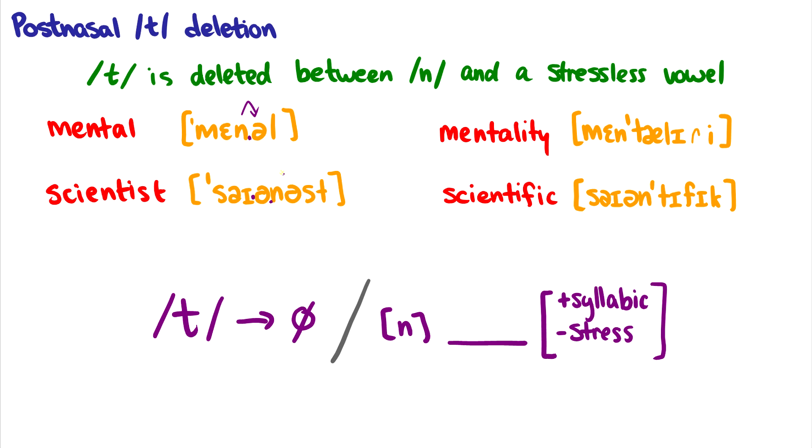In fact, in the word scientist, there isn't even a new syllable there. But a stressless vowel is actually more specific what we're talking about here. So the vowel here does not have primary stress. There is no stress in the vowel nest in scientist. So because there's no stress, we have t deletion.